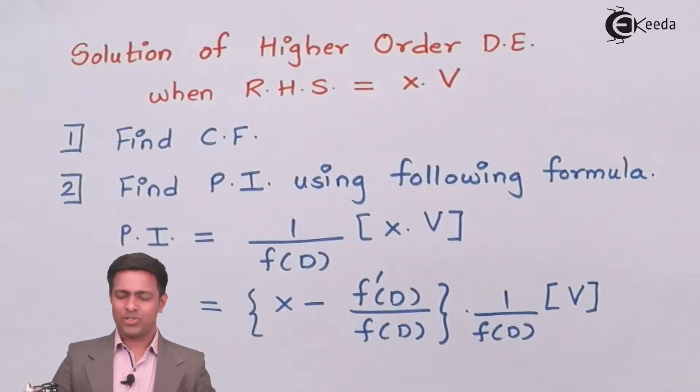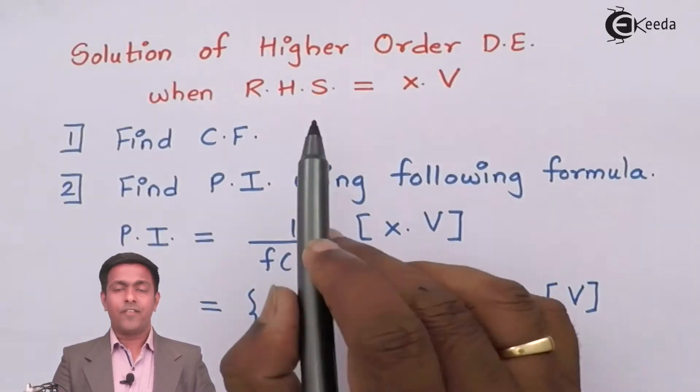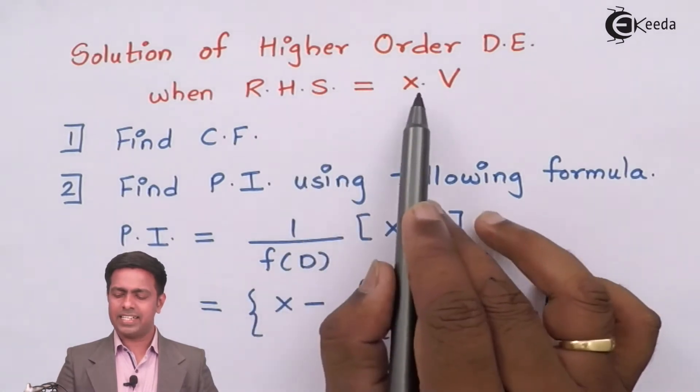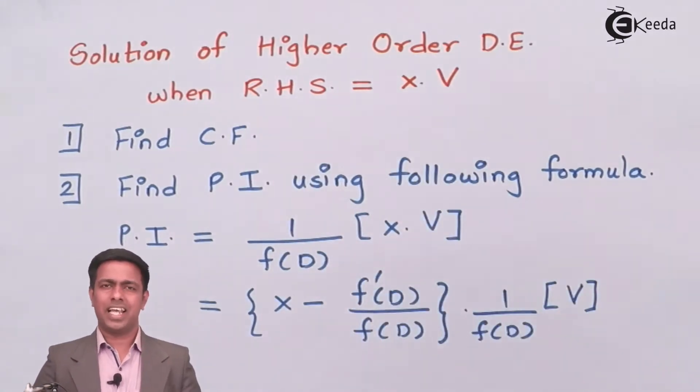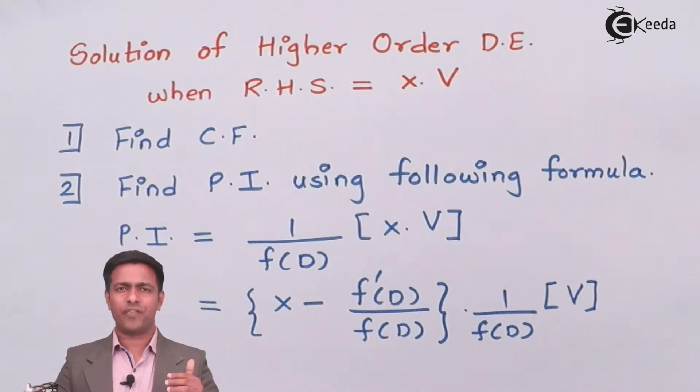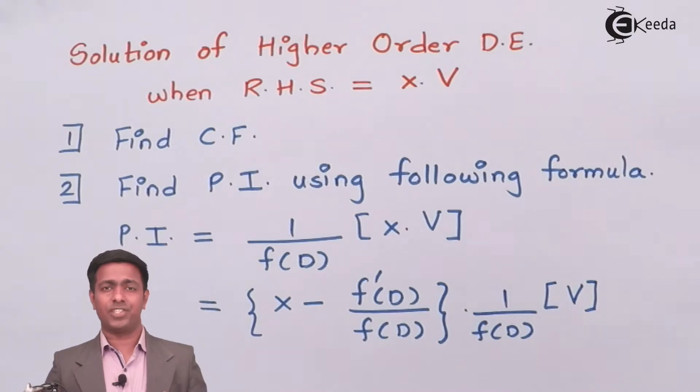Here are the steps. You can see that whenever we have right-hand side as x into V, where V is some function of x like a trigonometric function, exponential function, or some other function of x, we have to follow two steps. Using these two steps we can get the solution of any higher order differential equation which has right-hand side as x into some function of x.